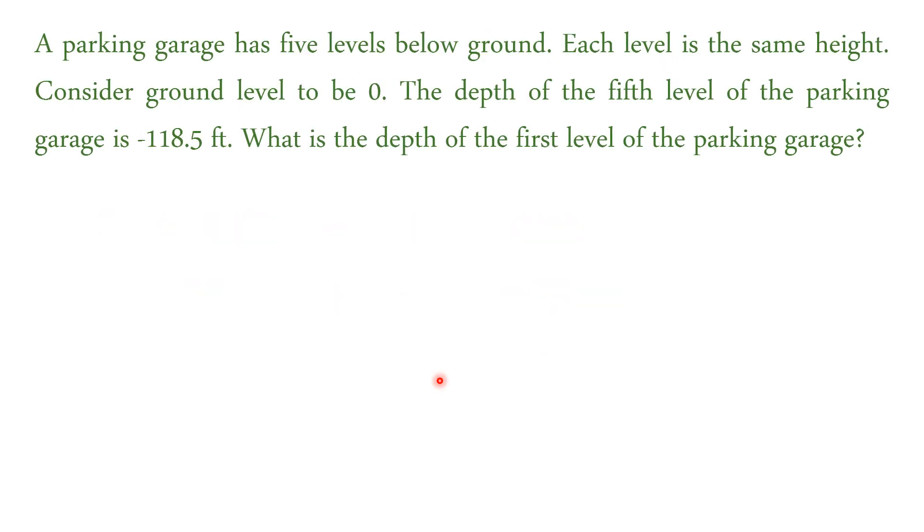And then another one is a parking garage. It's five levels below ground. Each level is the same height. Considering ground level to be zero, the fifth level of parking garage is negative 118.5 feet. What is the depth of the first level of the parking garage? So, we're going to illustrate it in this way. So, ground will be the zero, and then there are five levels below it, where the fifth is negative 118.5 feet. So, we are after of the first level, because that's what we are asked.